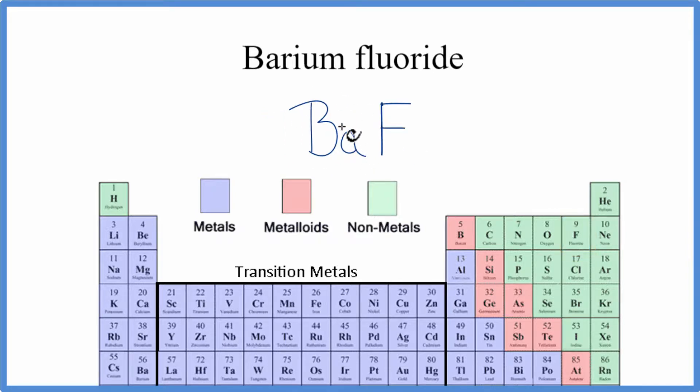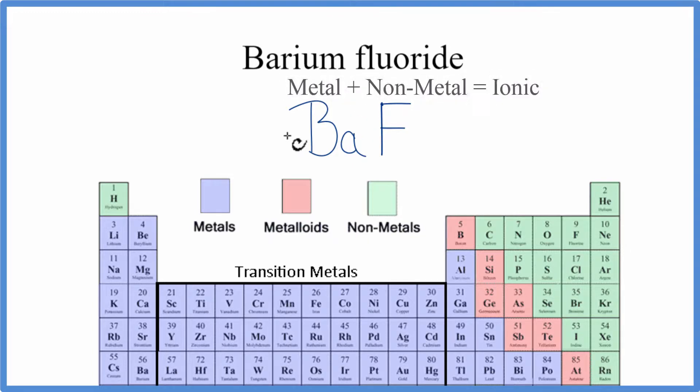So barium is a metal, and fluorine is a non-metal. And when you have a metal and a non-metal, you have an ionic compound.